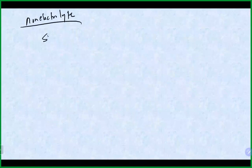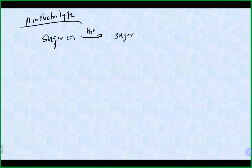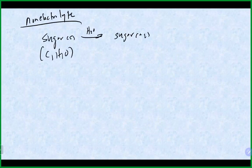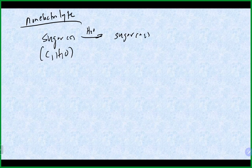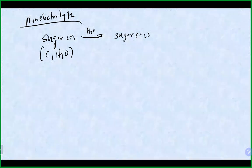A non-electrolyte is something like sugar. If you dissolve sugar in water it dissolves, but sugar is made of carbons, hydrogens, and oxygens — it is a molecular compound that shares electrons — so it will not produce any ions, and because no ions are produced, it does not conduct electricity.